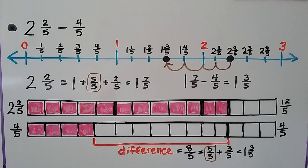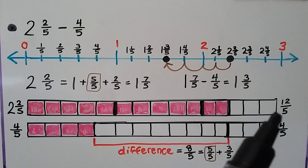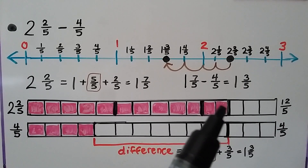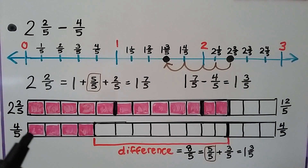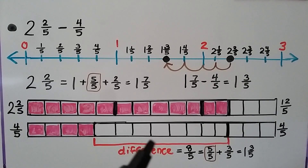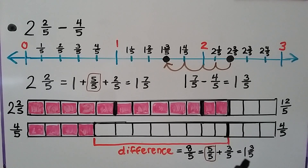Comparing with bar models: 2 and 2 fifths is the same thing as 12 fifths. We have 5, 10, 11, 12 fifths. We need to compare it to 4 fifths and we can see the red bracket is the difference between them — that's 8 fifths. And 8 fifths is equal to 5 fifths as 1 whole plus 3 fifths, so we can rewrite 8 fifths as the mixed number 1 and 3 fifths. We know we've got the right answer.